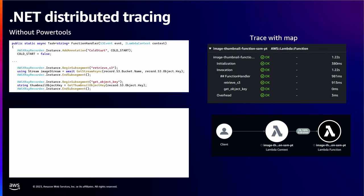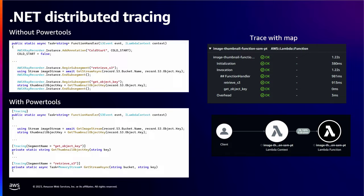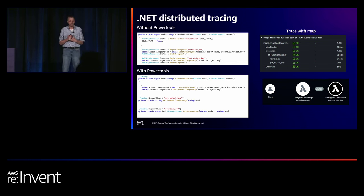PowerTools makes this way simpler. All you have to do is add the Tracing attribute to your handler, and the cold start tracking is automatically taken care of. To collect sub-segments, instead of manually starting and ending each one, with PowerTools you just add the Tracing attribute to individual method calls within your Lambda function and supply the sub-segment name. Every time that method is called, PowerTools reports it as a sub-segment to X-Ray. Therefore, you can collect all the same information with less code.